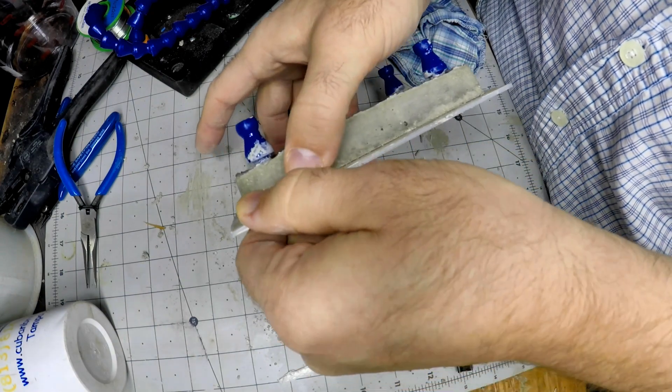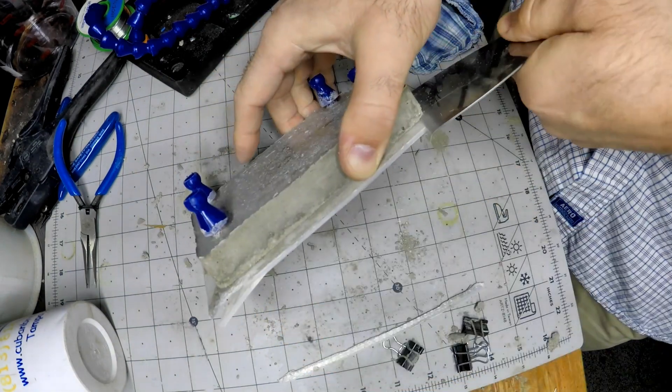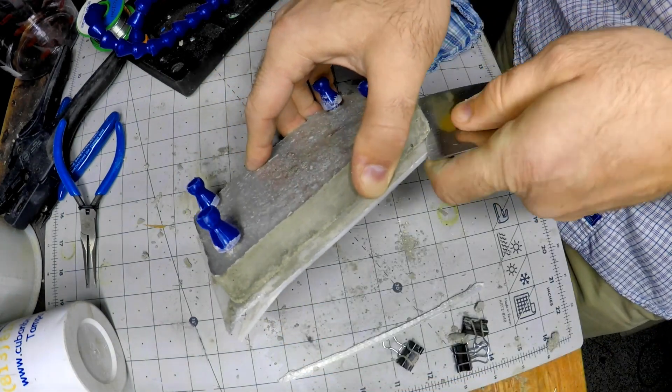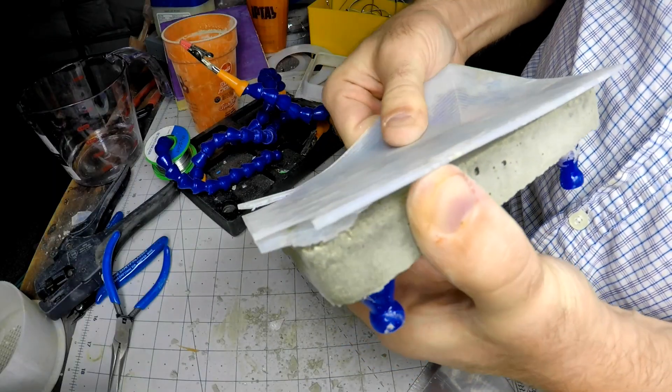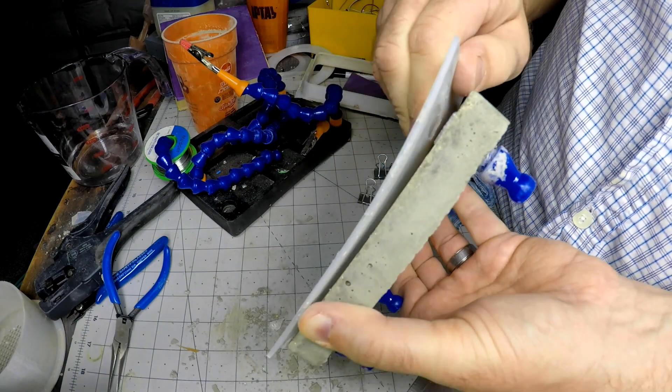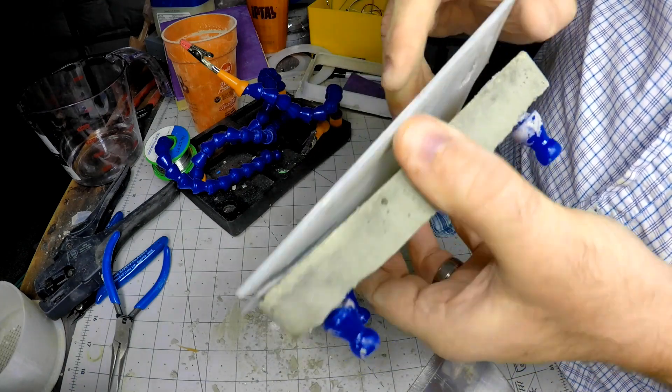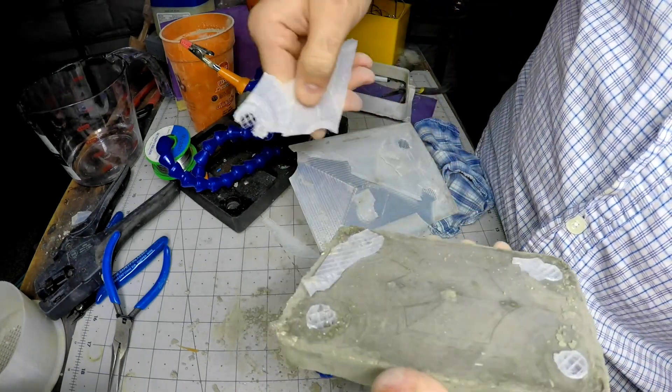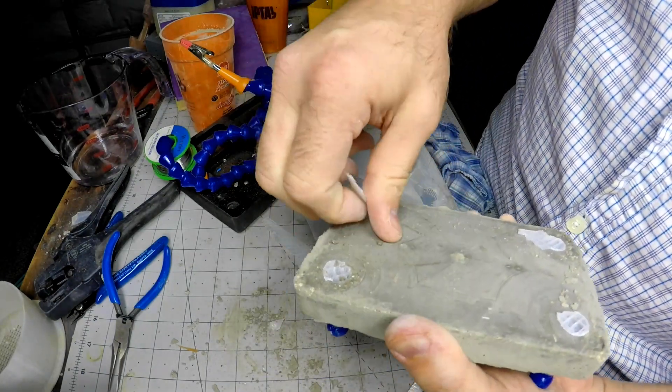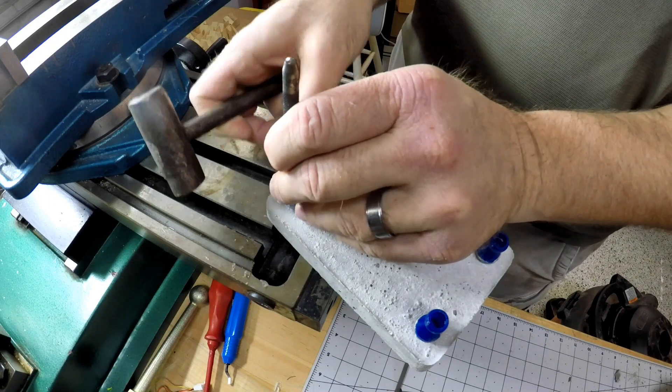I was hoping to reuse this for some more solder squids, but as you can see here, once I took it off, it just started to disintegrate. Yeah, that's definitely not getting used again. Probably my strategy for the next one, if I make another one, is to make more of a draft angle on the nubs that hold up the solder squids themselves.